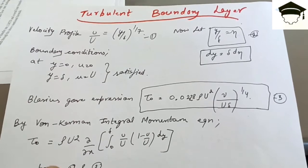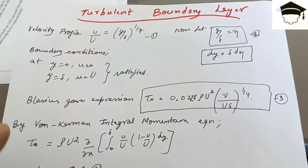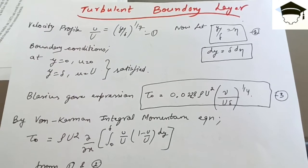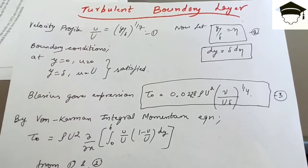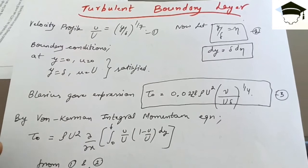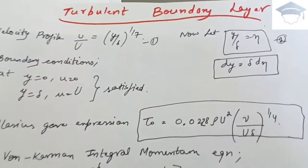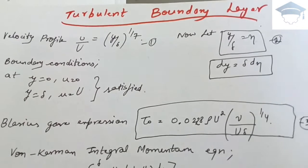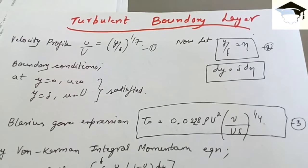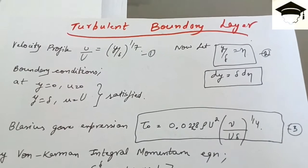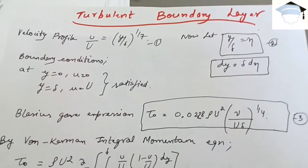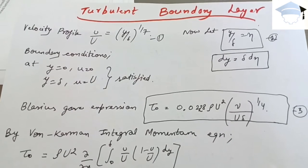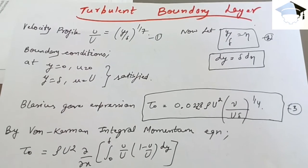The velocity profile for turbulent boundary layer is given by u/U = (y/δ)^(1/7). Assuming y/δ = η, so dy = δ dη, where δ is the boundary layer thickness. The boundary conditions are: at y = 0, u = 0; and at y = δ, u = U. Substituting into the velocity profile confirms that the boundary conditions are satisfied.